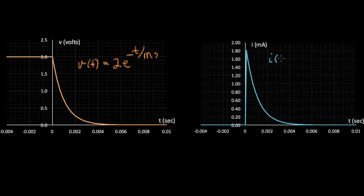I of T equals two volts over 1,000, e to the minus T over RC, or T over one millisecond.